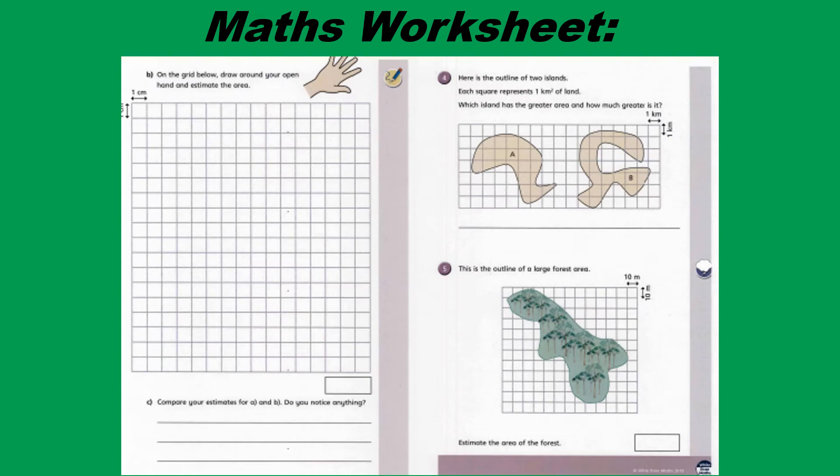Moving on to question 3b, you are going to draw around your hand again but this time have it wide and open. Make sure when you are estimating the area of this hand you compare it to the previous hand that you drew. Have you noticed anything? Is one area bigger than the other, and why do you think this?